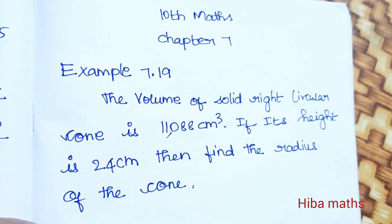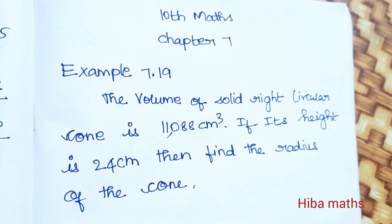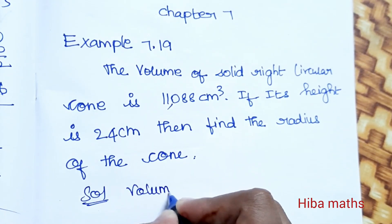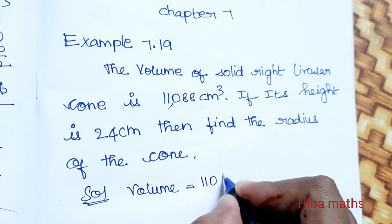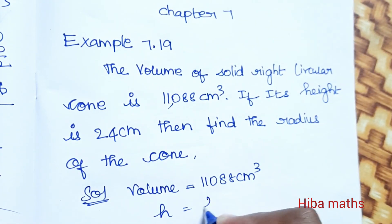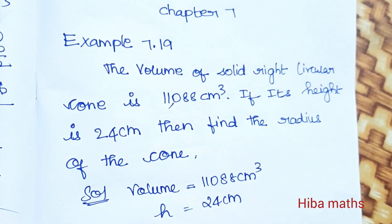We need to find the radius given the volume and the height. So in the solution, volume is 11,088 cm³, height is 24 cm.